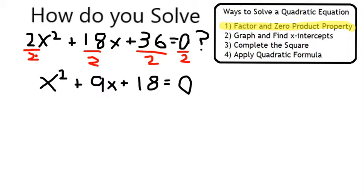So then 2x squared just becomes x squared, 18 becomes 9x, 36 becomes 18, and I have a simpler equation that I can solve using the factor and zero product property.